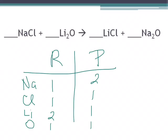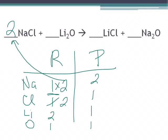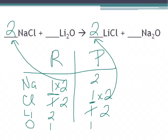You can see from the chart that our sodiums and our lithiums are not balanced. So we have to multiply the sodium chloride by two, placing that coefficient in front. That changes our chlorines — now we have two. On our product side we only have one, so we multiply that by two as well. That also changes our lithiums to two. So that equation is now balanced.